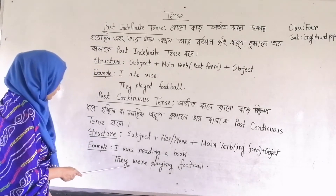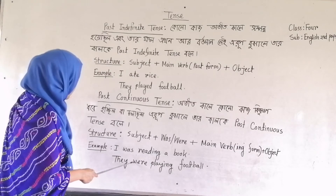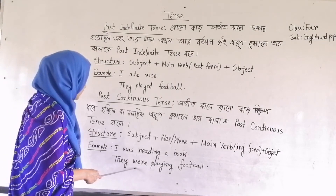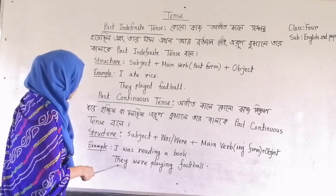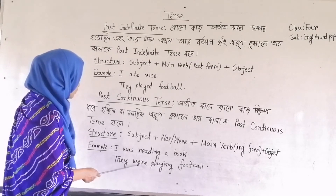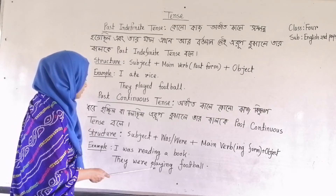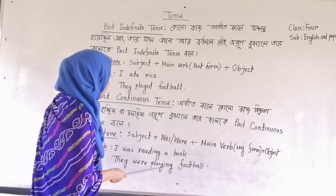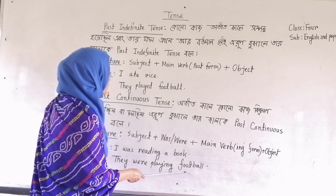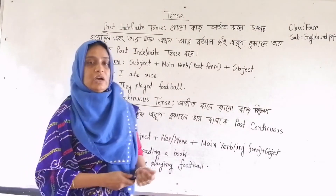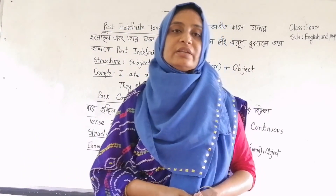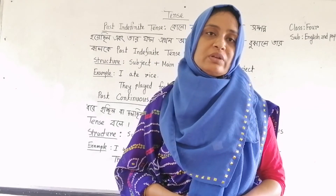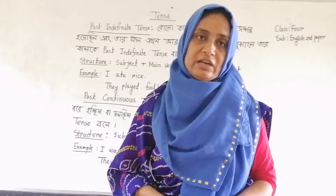Following the same rule: 'They were playing football.' 'They' is the subject; we use 'were' because this is third person plural number. 'Playing' is the -ing form of the main verb, and 'football' is the object. Dear students, I think you have enjoyed my class. Please learn this at home. Next class I will come with another topic. Till then, be happy. Allah hafiz.